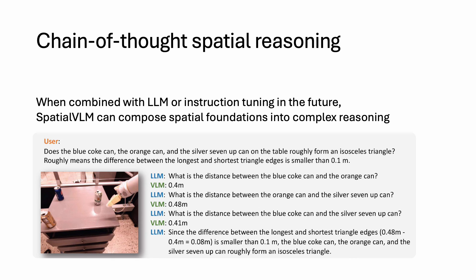In addition, we can leverage a pre-trained large language model to help us perform multi-step chain-of-thought spatial reasoning. For example, we ask the multimodal model whether three coke cans form an equilateral triangle within some tolerance, and the model is able to use chain-of-thought reasoning to give us an answer.